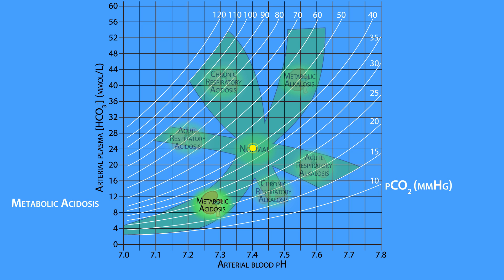Metabolic acidosis is defined as a decrease in arterial pH, which is usually due to a decrease in plasma bicarbonate concentration. For example, if the plasma bicarbonate concentration is reduced from 24 to 16 millimoles per liter while the PCO2 remains at 40 millimeters of mercury, the pH will drop from 7.4 to 7.23.